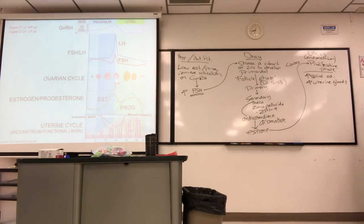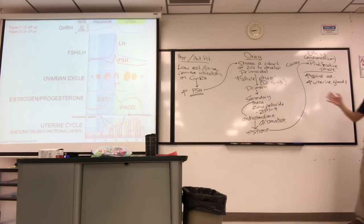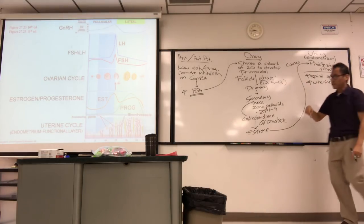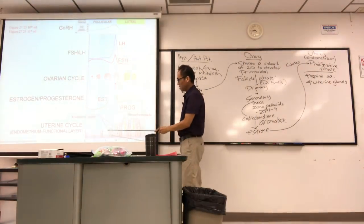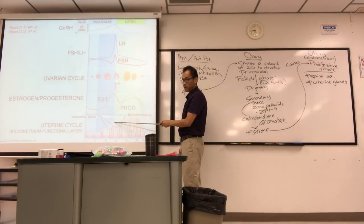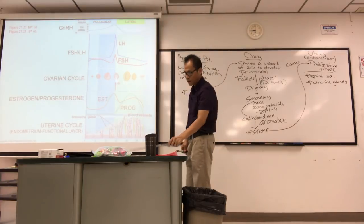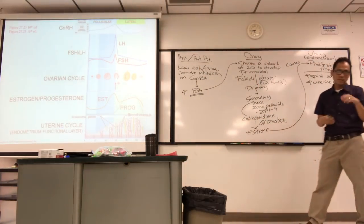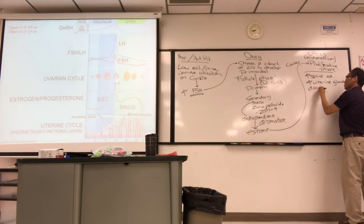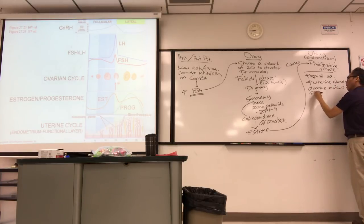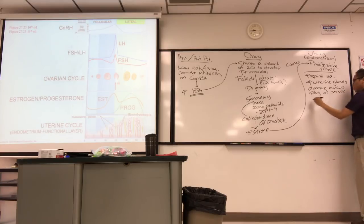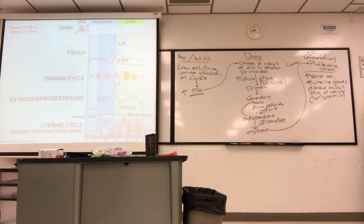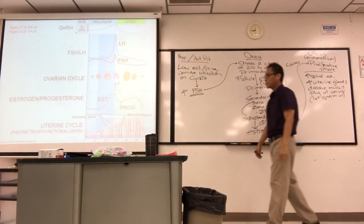We're pre-ovulation at days 5 to 13. We want to let sperm in, so the mucous plug at the cervix dissolves. The major hormone right now is estrogen. Looking ahead: the major hormone in the luteal phase will be progesterone. Estrogen has negative feedback on FSH — it turns off FSH. The body is telling the brain: we've got our 20 follicles, we want one ovulation, not multiple. So negative feedback stops developing more follicles.